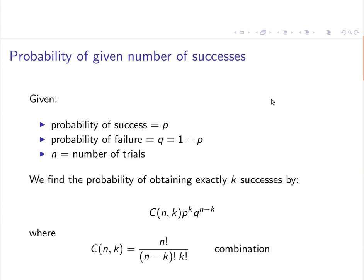That's a well-known formula. The probability of a given number of successes comes from knowing p, the probability of success, and q, 1 minus p, the probability of failure, and n, the number of trials. We find the probability of exactly k successes by computing combinations of n choose k, times p to the k, times q to the n minus k.